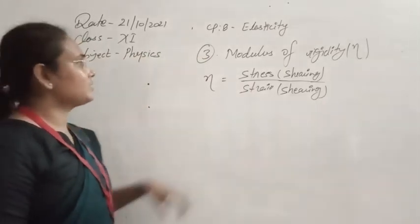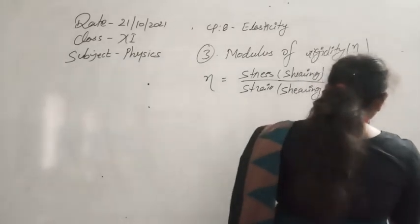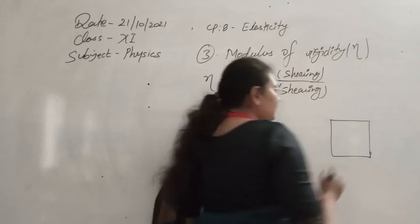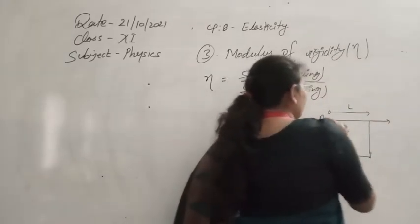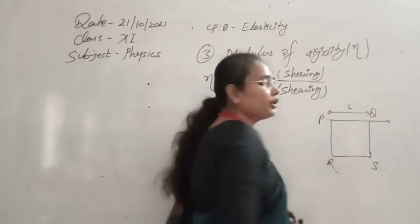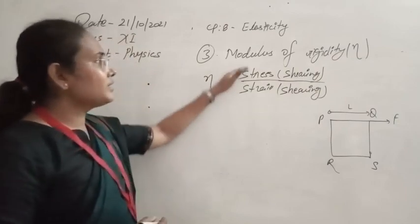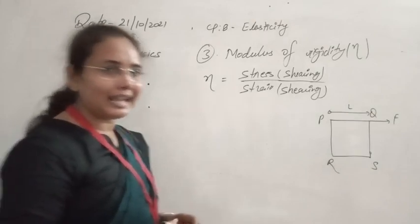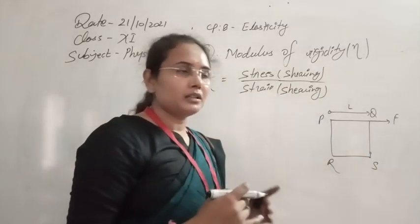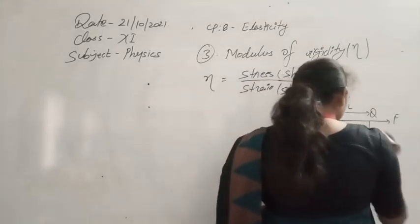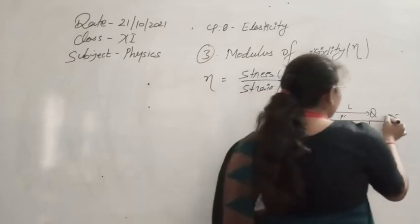Modulus of rigidity is defined as the ratio of shearing stress to shearing strain. To understand this concept, consider a square-shaped body. On this square body we keep one end fixed and apply a force F along the side PQ. The force per unit area gives us the shearing stress. Due to application of this force, that side faces a change in configuration, and the body starts to extend along its length so its shape begins to distort.